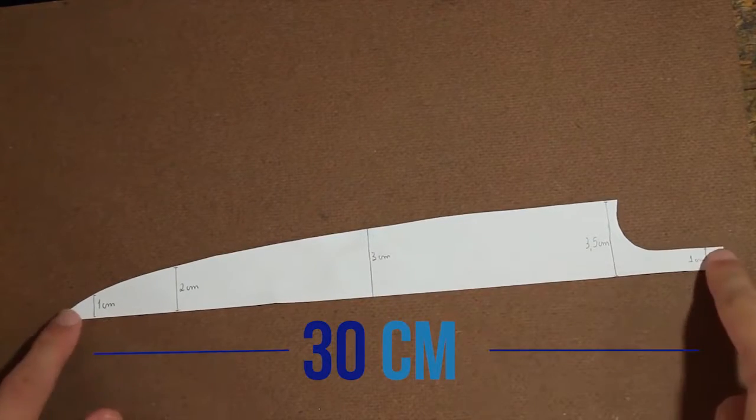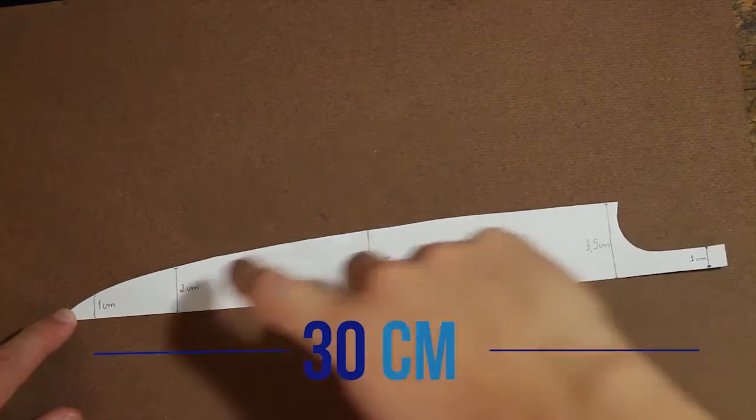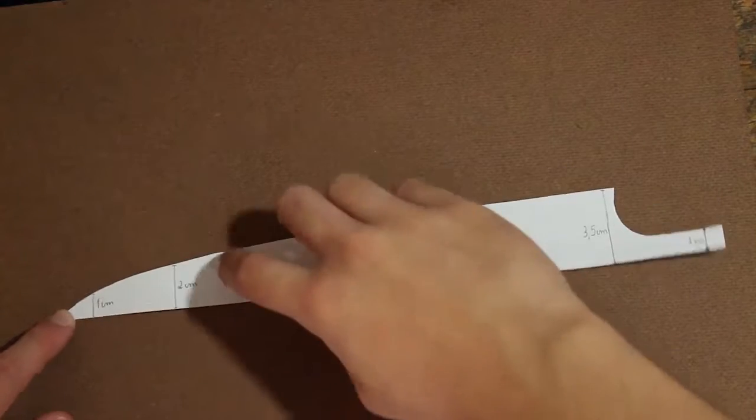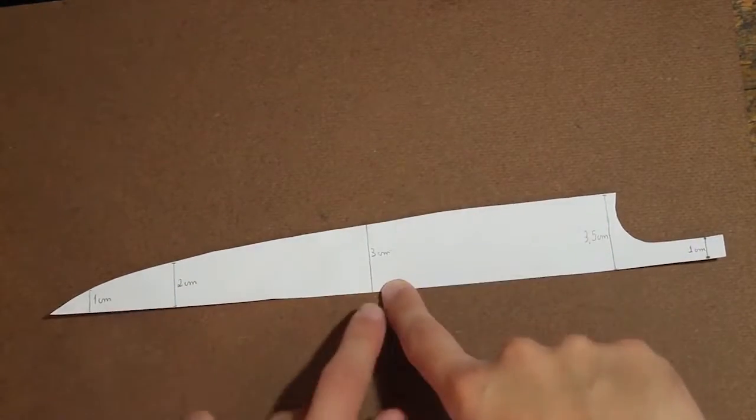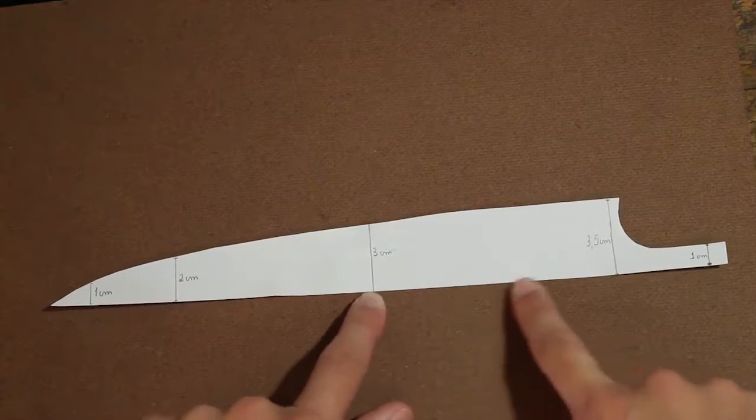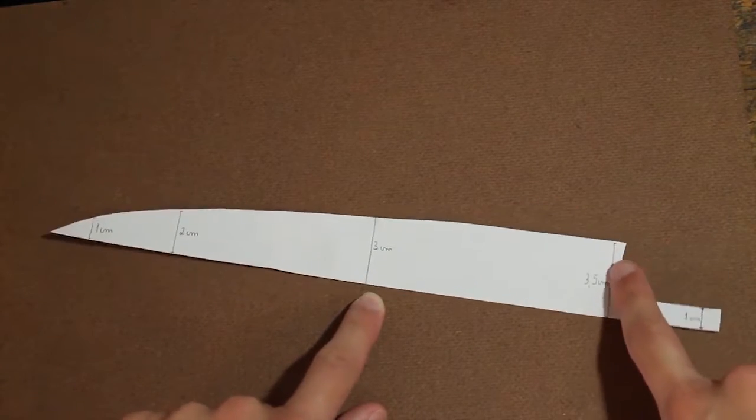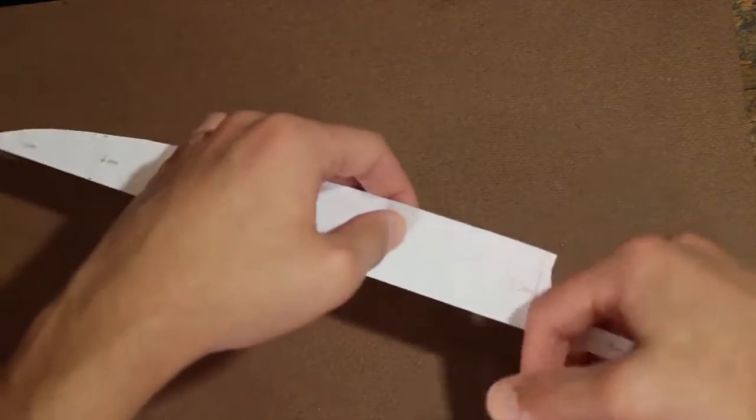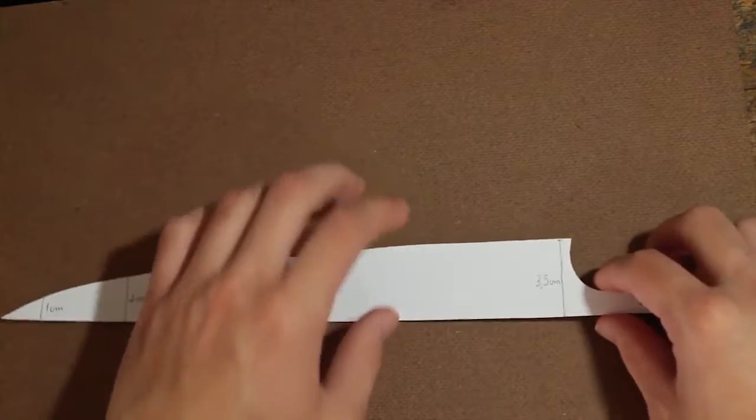Measurements are 30 cm long, 1 cm at the tip of the claw, then increase to 2, 3 in the middle, and at the end, near where you will grip with your finger, 3.5 cm.